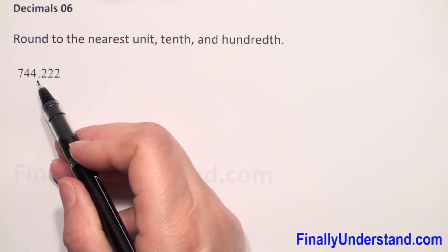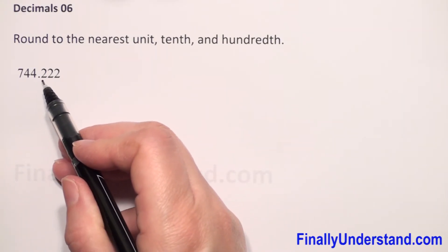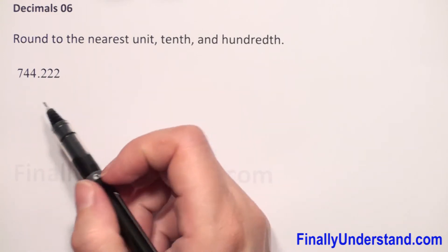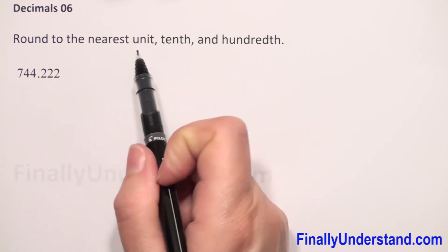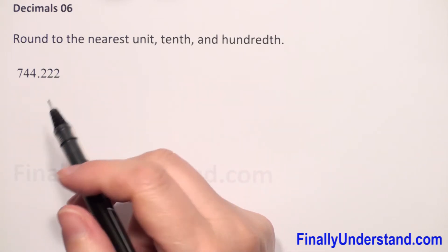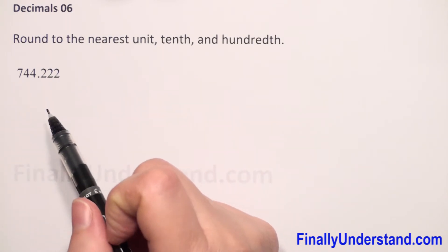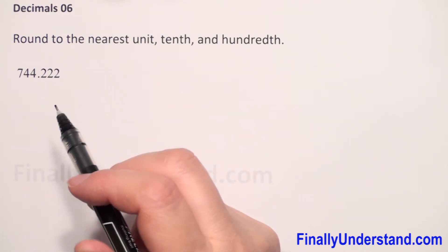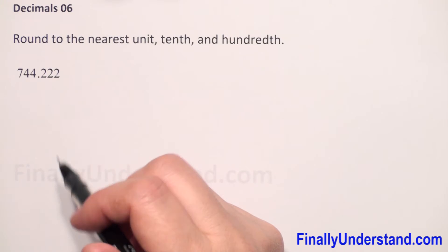We have a given decimal number, because we have a decimal point, and the decimal point is always between units and tens — or we can say ones and tens. So first we need to round our number to the nearest unit. When we need to round a decimal number, we have to use the same rule which we use to round a whole number.